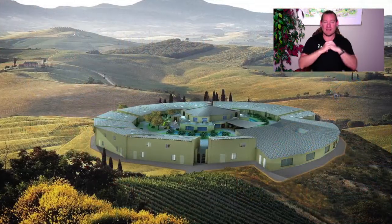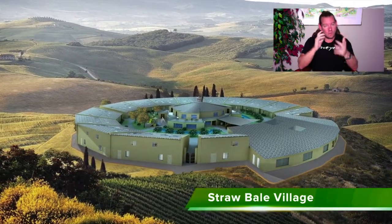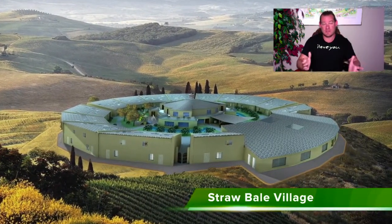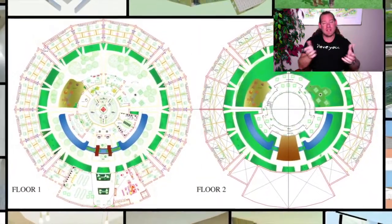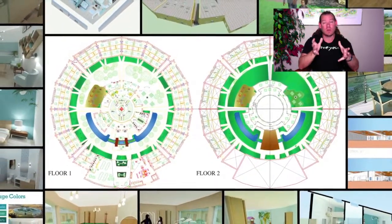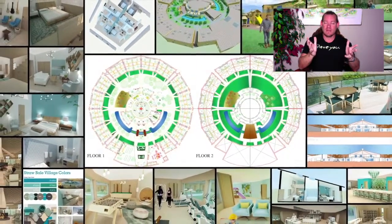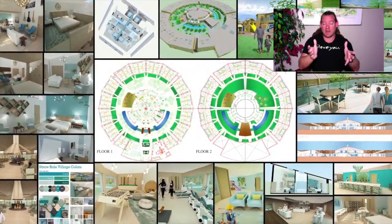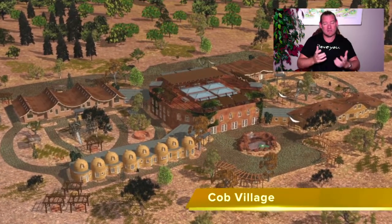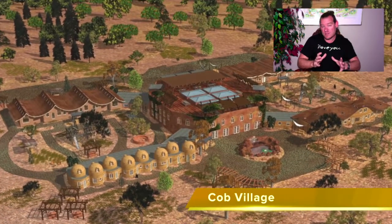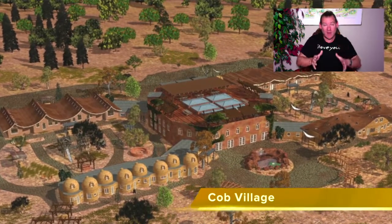We use more than we produce sooner and sooner every single year, and that's unsustainable. By definition, if something's not sustainable, it can't go on forever, so a solution is past due. One Community is creating that solution — supporting the science of sustainable ecology through open source tools, tutorials, resources, and do-it-yourself instructions for all aspects of what we call Highest Good Living.